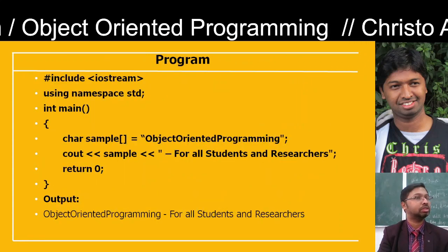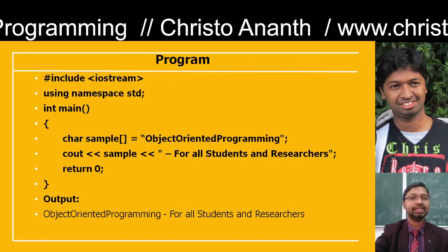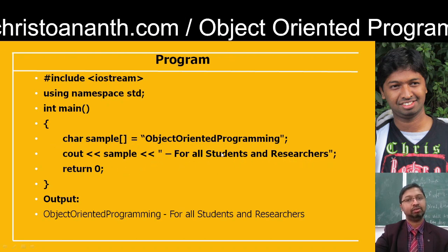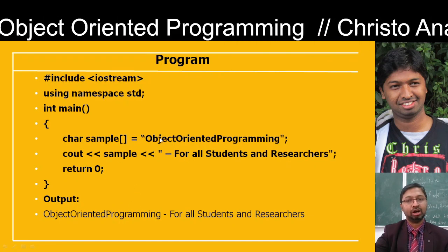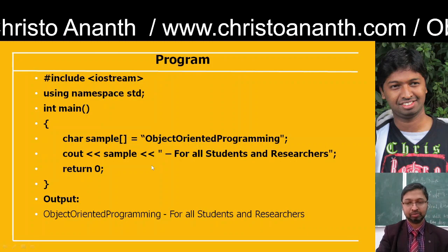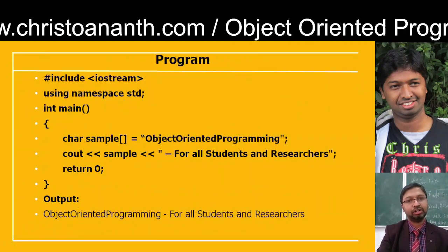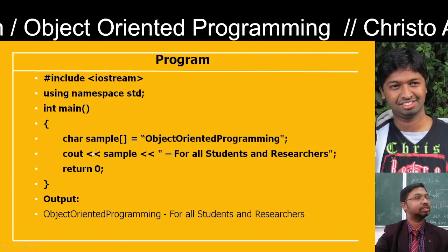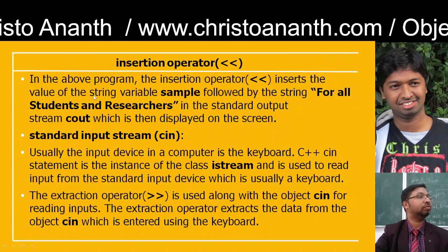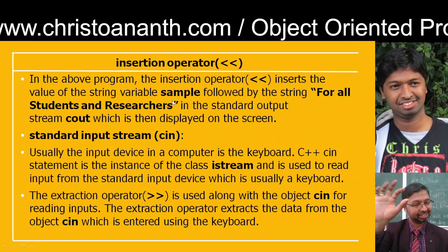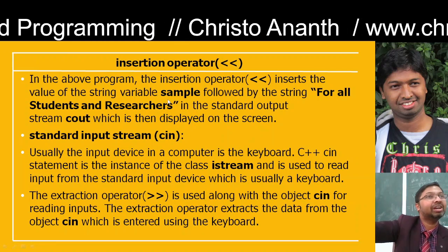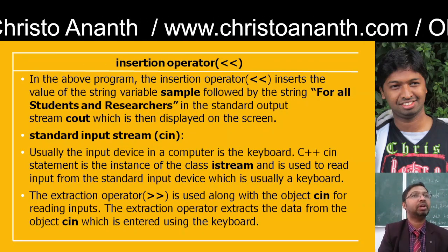Here is the program: #include iostream, using namespace std, in the main function. Character variable 'sample' stores 'object oriented program'. Then cout with the insertion operator prints 'sample' — for all students and researchers — followed by a newline, then return 0. In the output you can see 'object oriented programming' appears continuously followed by 'for all students and researchers'. The insertion operator inserts the value of the string variable 'sample' — it is not printing the word 'sample' but the contents stored in sample. That is how you print using cout.